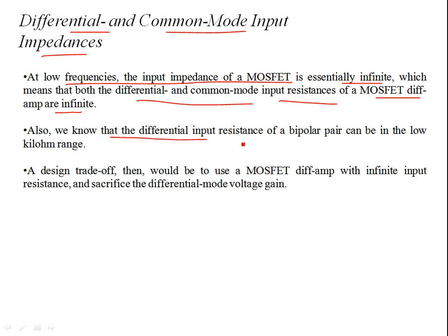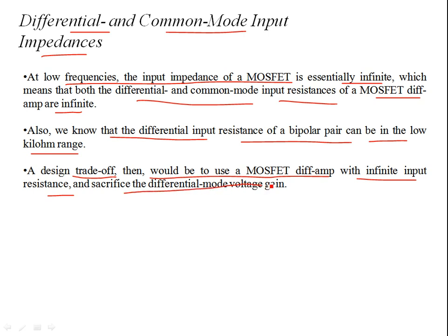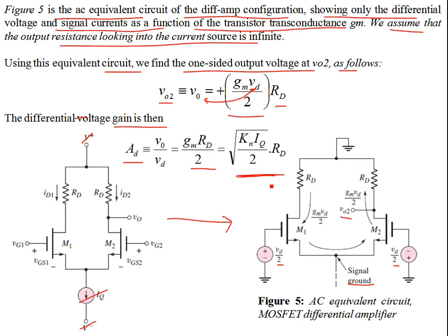In contrast, the differential input resistance of a bipolar pair can be in the low kilohm range. A design trade-off is to use a MOSFET differential amplifier with infinite input resistance at the expense of differential mode voltage gain. However, the differential mode voltage gain for MOSFET pairs depends on the output resistance — using a cascode current mirror configuration can significantly increase the output resistance and therefore improve the differential gain. This will be discussed in the next video.